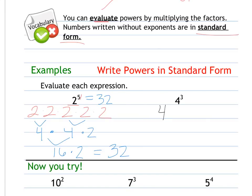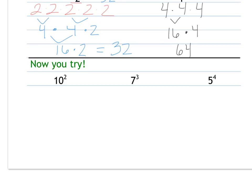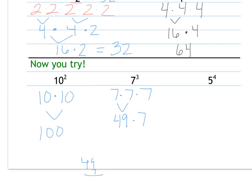For four cubed: four times four times four. Four times four is sixteen, times that other four is sixty-four. Now you try. Ten squared, or ten to the second power, is ten times itself twice — ten times ten is one hundred. Seven to the third power is seven times seven times seven. Seven times seven is forty-nine, times another seven — you may need to do some side work using the standard algorithm — for a total of three hundred and forty-three.